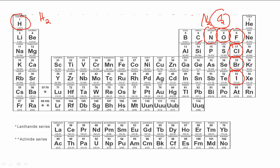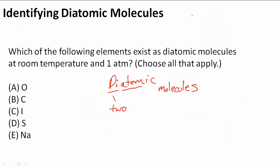Now that we know this list, let's go back and answer this question. It says which of these elements? We know that there are only seven diatomic elements, and oxygen and iodine are those two present here. So those are the answers to our question.